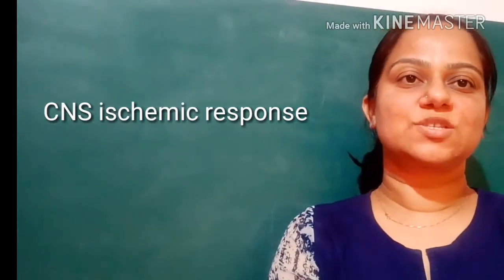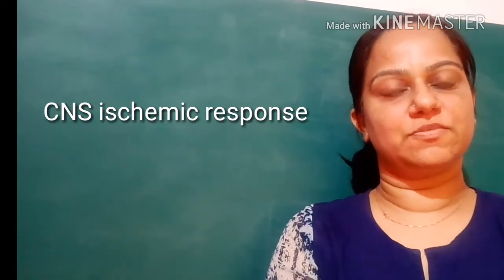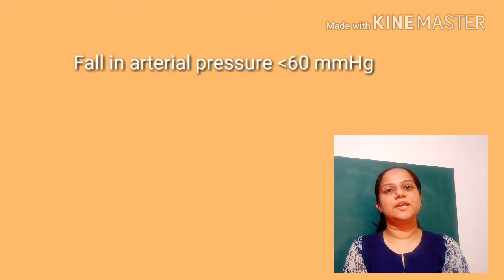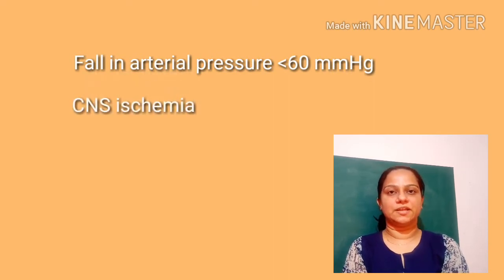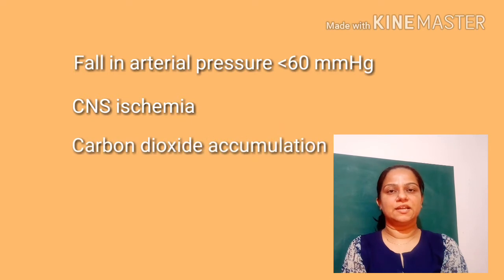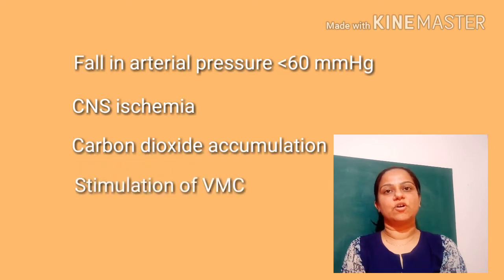Hello everyone, let us go through CNS ischemic response for regulation of blood pressure. When arterial pressure falls less than 60 mmHg, there will be ischemia to the brain. Due to CNS ischemia, there will be accumulation of carbon dioxide and metabolic products in the brain. This will cause stimulation of the vasomotor center of the brain.